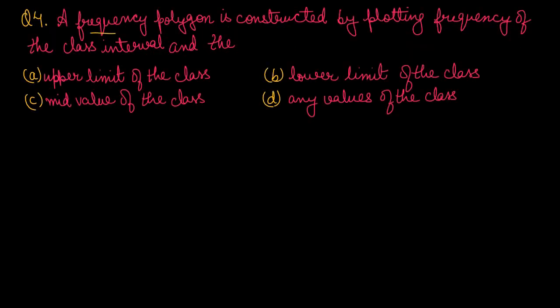Question number 4: A frequency polygon is constructed by plotting the frequency of the class interval and which value of the class — upper limit, lower limit, mid value, or any value? A frequency polygon uses frequency on the vertical axis (y-axis) and the mid value of the class on the horizontal axis (x-axis). So option number C, mid value of the class, is the right one.